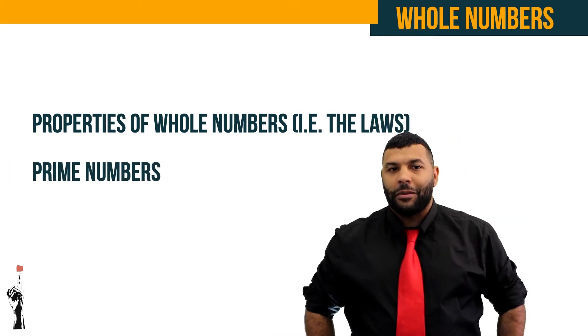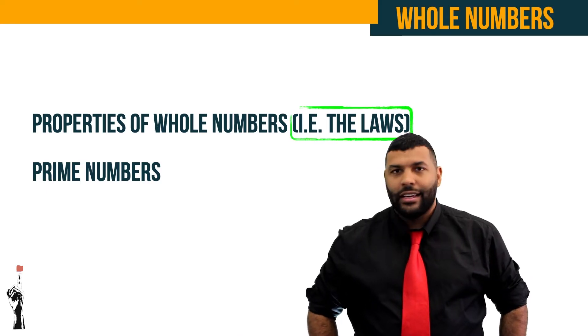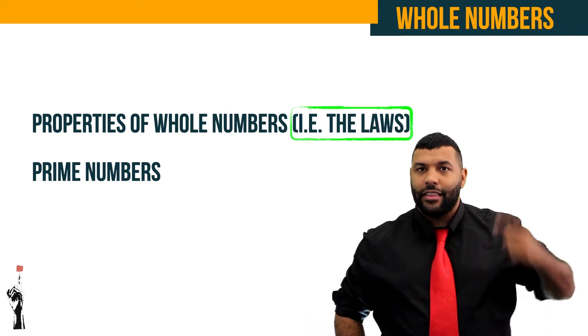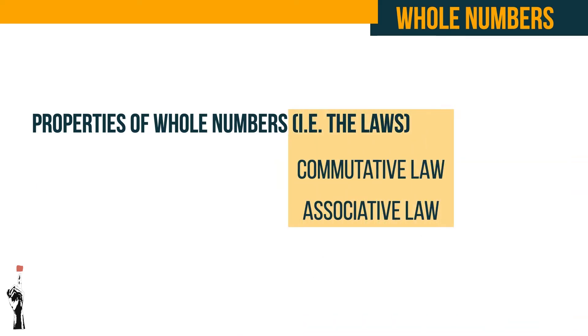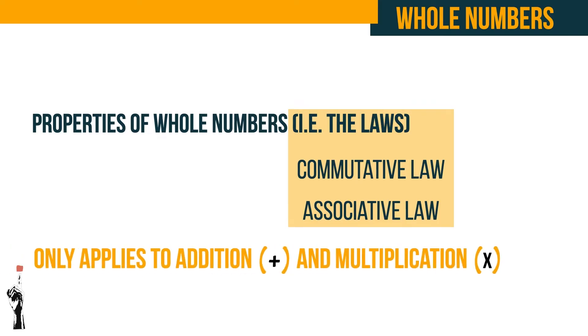When we speak about the properties of whole numbers we refer to its laws, namely the commutative law and the associative law. These laws only apply to multiplication and addition of whole numbers.